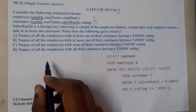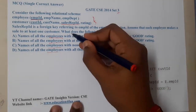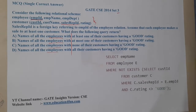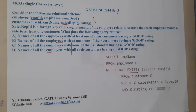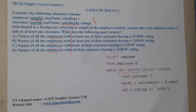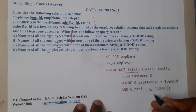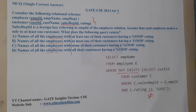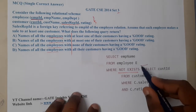Let us go through the query. We are selecting employee name. All options agree up to that point. Then we check the WHERE condition: WHERE NOT EXISTS — SELECT customer ID FROM customer WHERE c.sales_representative_id = e.employee_id AND c.rating — and that symbol means NOT EQUAL TO. In SQL we use that symbol for not equal to.